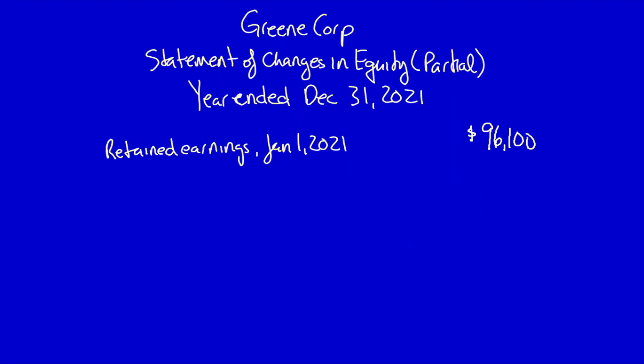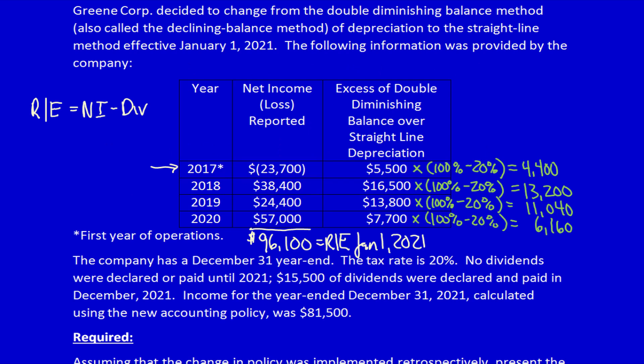Next, we show the change in accounting policy. The impact of changing from diminishing balance to straight line over all four years (2017–2020) is the total of all after-tax changes calculated: adding all four after-tax figures together gives a cumulative impact of $34,800. If the straight line method had always been used, retained earnings at January 1st, 2021 would have been $34,800 higher. This can be verified by adjusting each year's net income individually and summing them, but the cumulative figure captures the total effect.